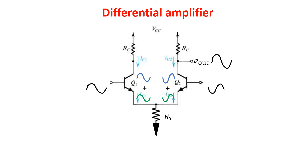The output signal has opposite phase with respect to the emitter of Q2, as expected from the common emitter configuration. So qualitatively, the difference in the input signals is amplified because the opposite signals reinforce each other. Another important aspect is that the midpoint acts as a virtual ground because the two signals on the left branch are equal but opposite to the two signals on the right branch. As long as the input is differential, the voltage at that point is fixed because the left signals push the voltage up and the right signals pull it down, so the net effect is null.